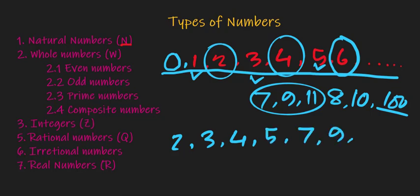...9, 11, 13. So 2 is divided by 1 and 2 itself. 3 is divided by 1 and 3 itself. 4 is divided by 1, 2 and 4. So 4 is not a prime number.